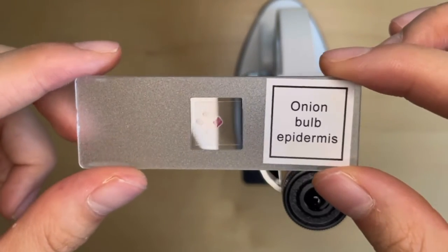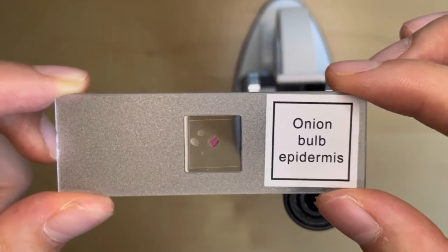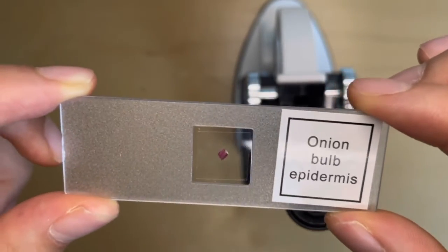When you first see this, you may be like, what? Onion? Okay, bulb? That's okay. Epidermis, which is the least okay.